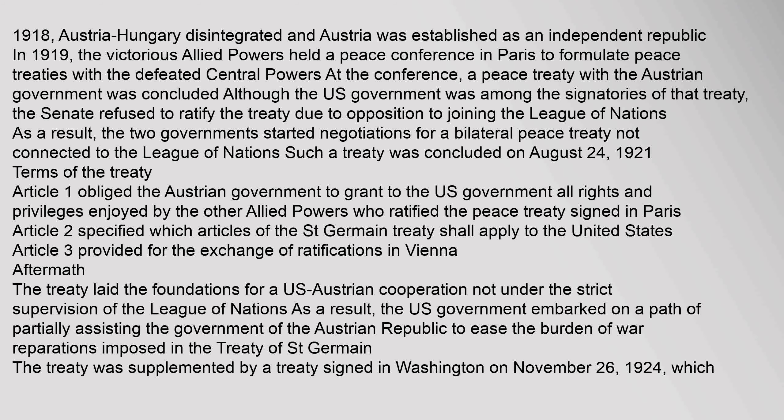The treaty laid the foundations for a U.S.-Austrian cooperation not under the strict supervision of the League of Nations. As a result, the U.S. government embarked on a path of partially assisting the government of the Austrian Republic to ease the burden of war reparations imposed in the Treaty of Saint-Germain. The treaty was supplemented by a treaty signed in Washington on November 26, 1924, which provided for the establishment of a mixed U.S.-Austrian-Hungarian commission to decide the amount of reparations to be paid by the Austrian and Hungarian governments to the U.S.